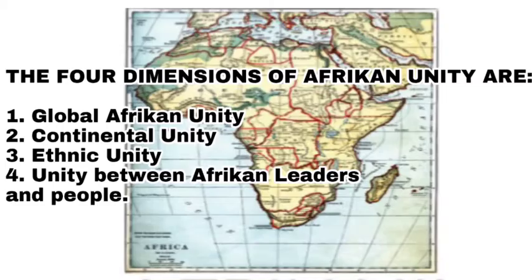The four dimensions of African unity are: 1. The global African unity. 2. The continental unity of Africa. 3. The ethnic unity of Africans. And finally, 4. The unity between African leaders and people.